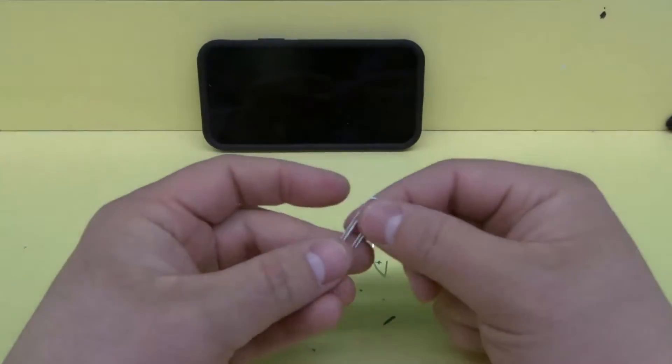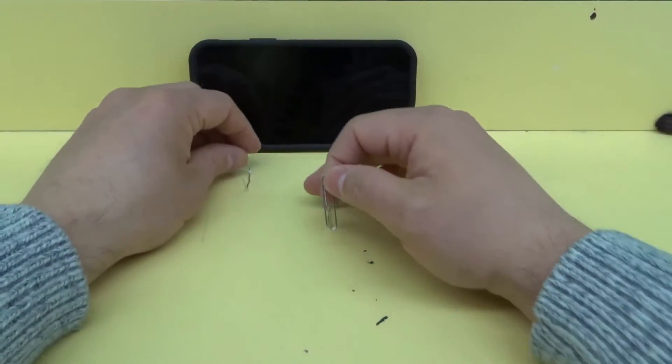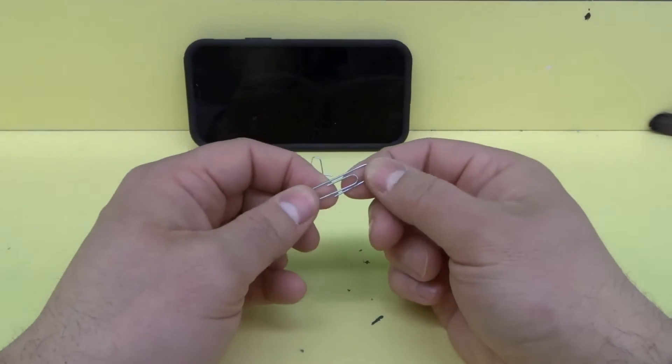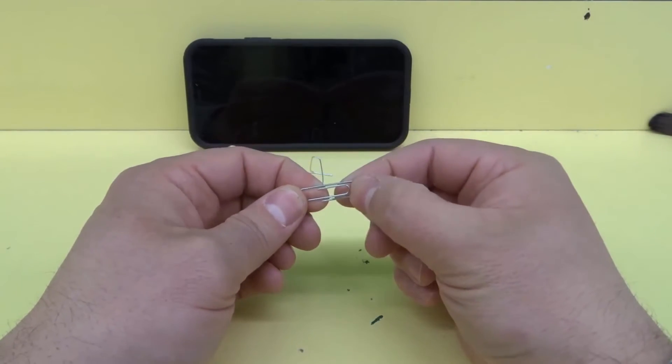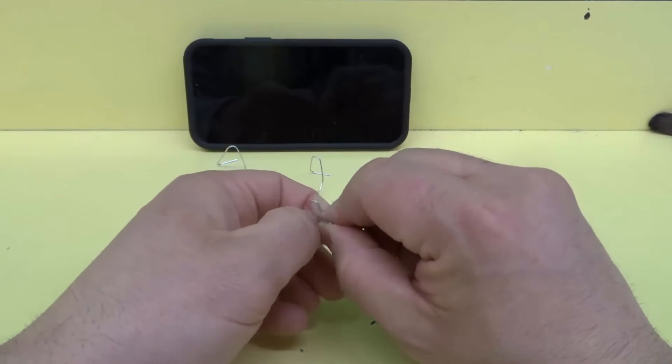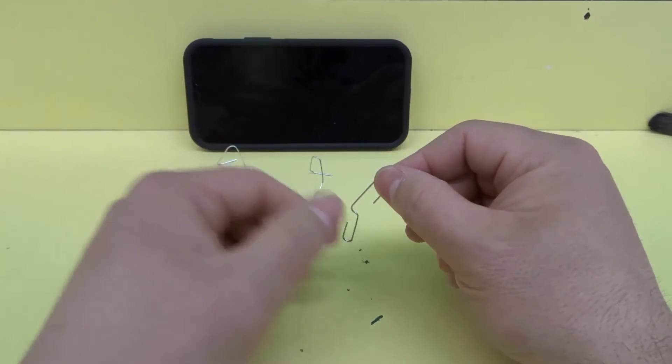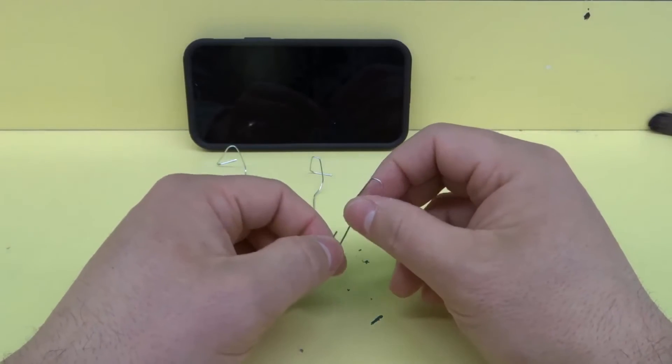You can take a paperclip—bigger ones work better, but this is an example. This is a pretty big phone and small ones still work really well. We're going to open it up. You have the inner portion and the outer portion. We're going to open it up just like this.